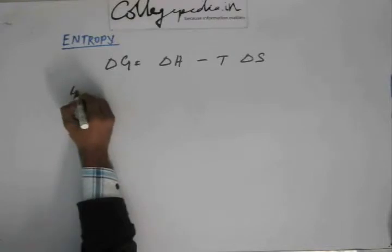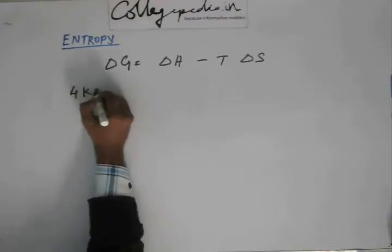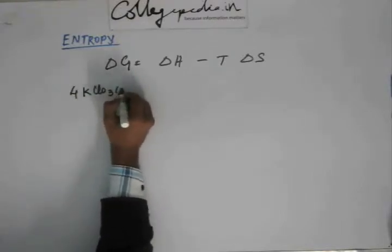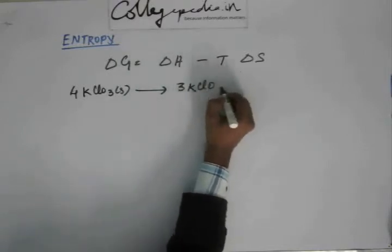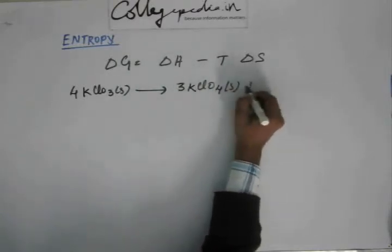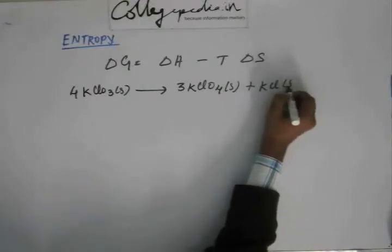Suppose I have a reaction like this: 4KClO3 solid giving 3KClO4 solid plus KCl solid.